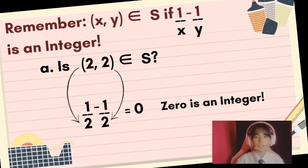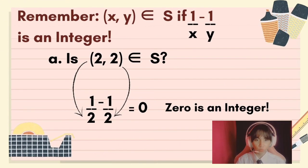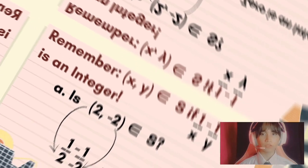For the third in item A, 2 and 2, so we will substitute it also with the same form: 1 half minus 1 half equals 0. Again, 0 is an integer, so 2 and 2 are an element of relation S.